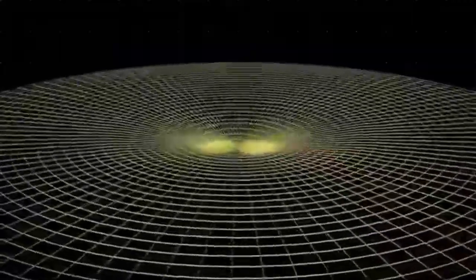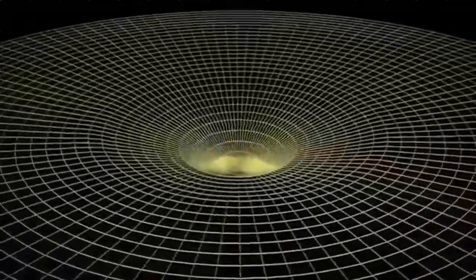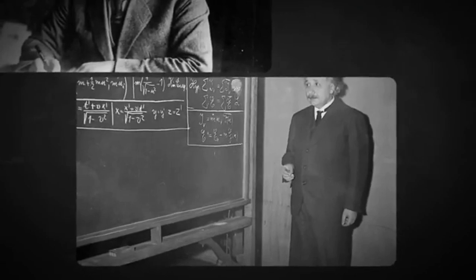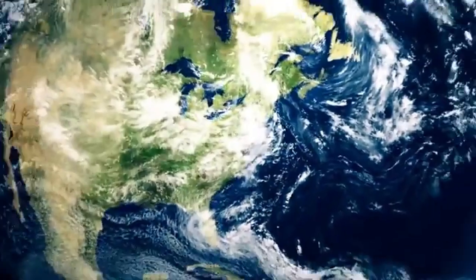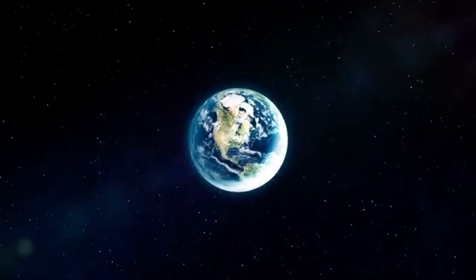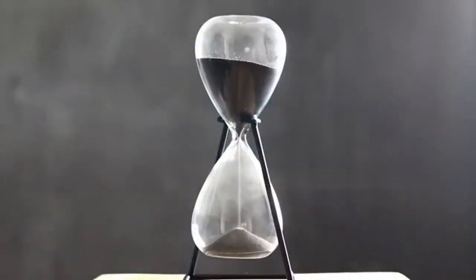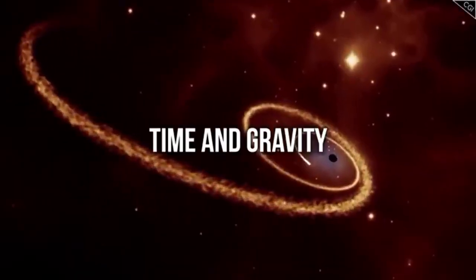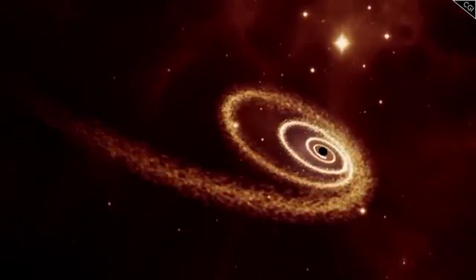Time dilation, where time slows down depending on motion, becomes more pronounced as you approach the speed of light. Imagine two identical twins, one on Earth and the other traveling into space at a significant fraction of the speed of light. When the space-traveling twin returns, they will be younger than their Earth-bound sibling. This twin paradox is a real consequence of time dilation.